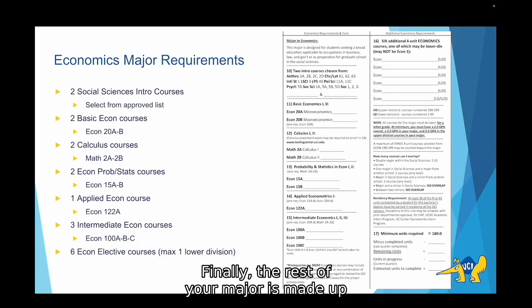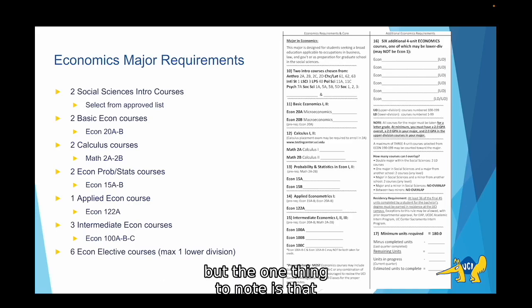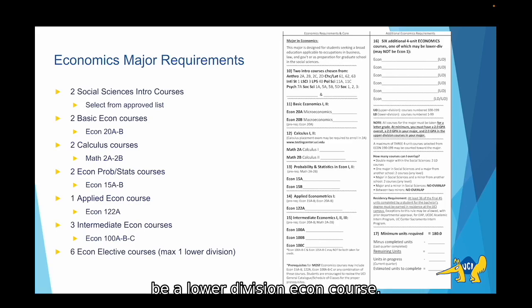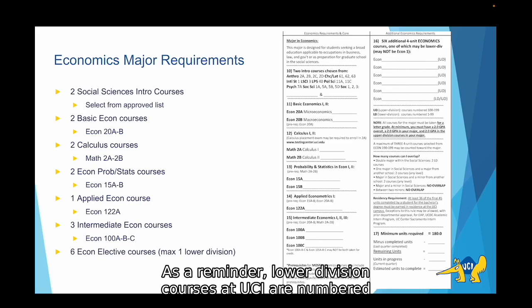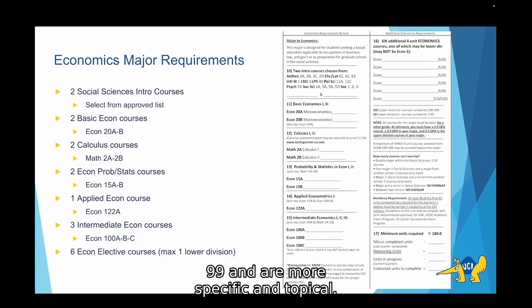Finally, the rest of your major is made up of six economics elective courses. These can be any econ classes, but only a maximum of one can be a lower division econ course — all the rest must be upper division courses. As a reminder, lower division courses at UCI are numbered 1-99 and are considered introductory courses, while upper division courses are numbered 100-199 and are more specific and topical.